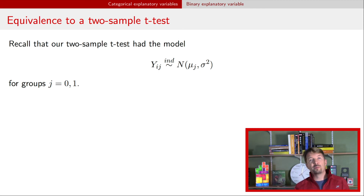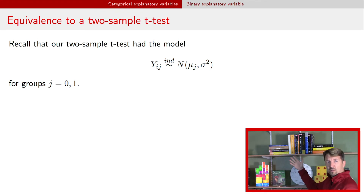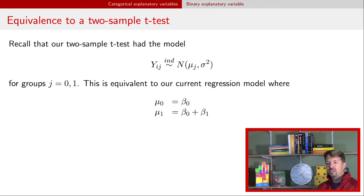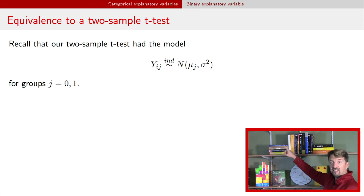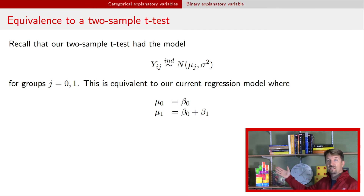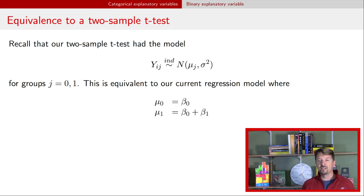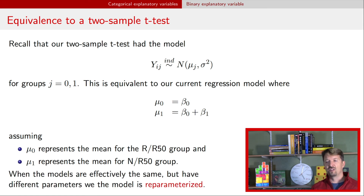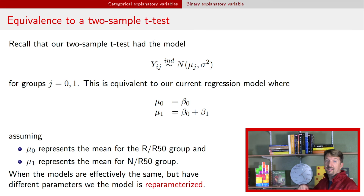In a previous video we talked about the two-sample t-test, and that video discussed a model y_ij where j indicated two different groups and i indicated observations within a group. That model had two different means, mu zero and mu one. If we translate that model into our regression framework, we simply have mu naught equal to beta naught and mu one equal to beta naught plus beta one. This is called a reparameterization — multiple ways of writing the same model — and this is just a reparameterization of the two-sample t-test model in the regression framework.